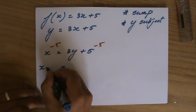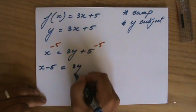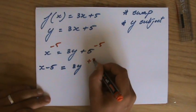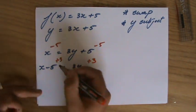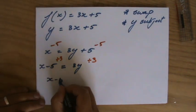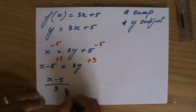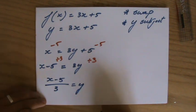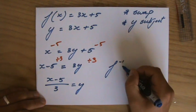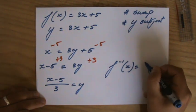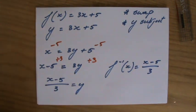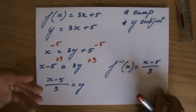So x minus 5 equals 3y, and then I am going to divide both sides by 3. So it's going to be x minus 5, the whole thing divided by 3 equals y. And the inverse function therefore is x minus 5 over 3.